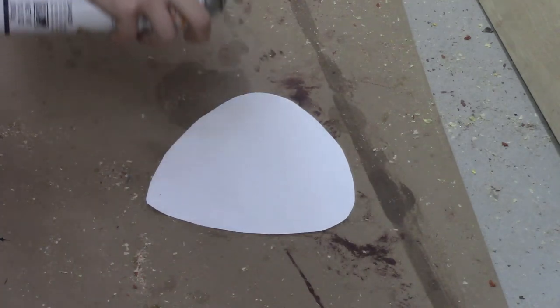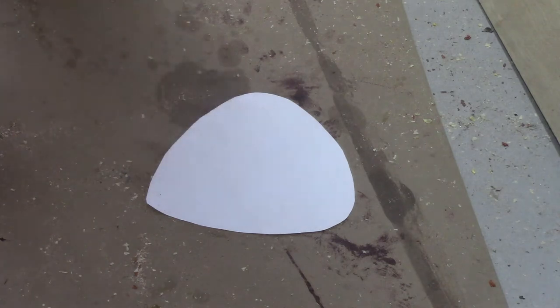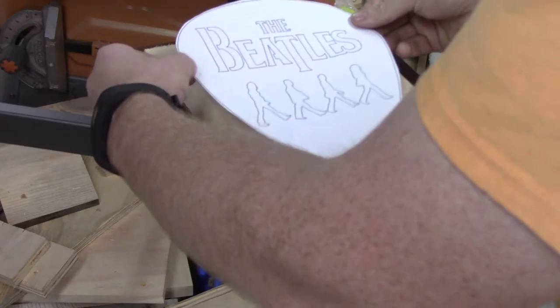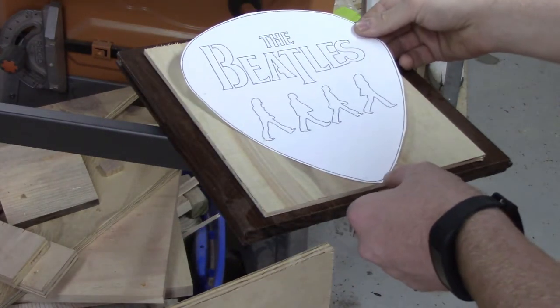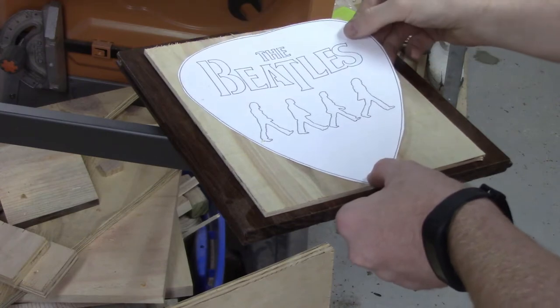I printed off the template and I did enlarge it, so I did edit it a little bit. I attached the pattern with spray adhesive two times - one for the pattern that I'll actually cut out and one for the backer.